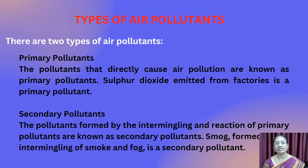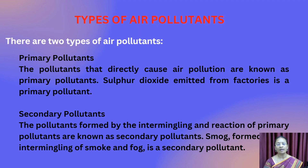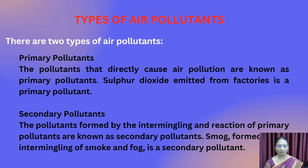There are two types of air pollutants: primary pollutants and secondary pollutants. Secondary pollutants are not emitted directly. They are formed when primary pollutants react with themselves and other components of the atmosphere. For example, smog formed by the intermingling of smoke and fog is a secondary pollutant.